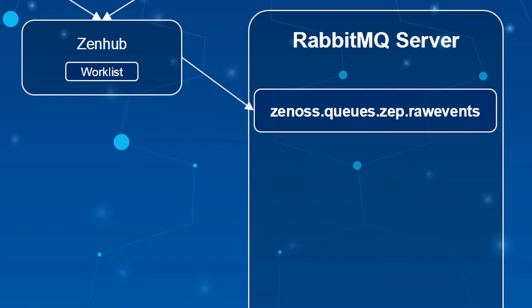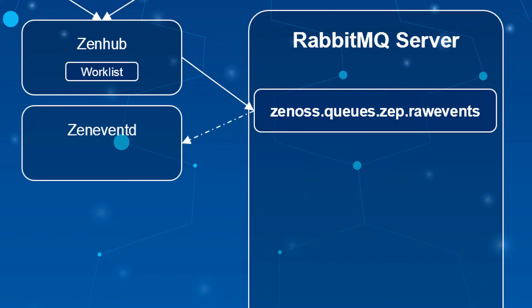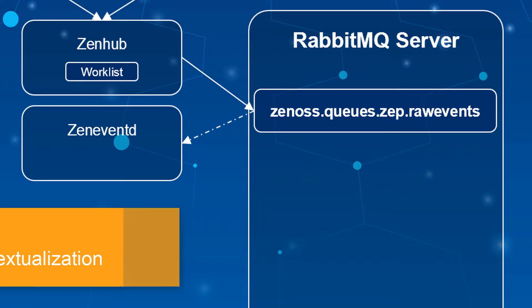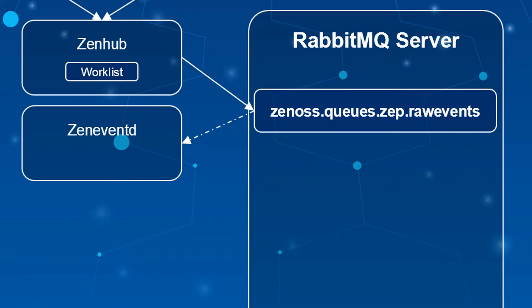These raw events from the Rabbit queue are consumed by the ZenEventD daemon, which begins its work on them. The role of ZenEventD is complex, but it can be generally broken down into three main duties. First, for events coming from known, monitored devices, ZenEventD will add that device's information to the event — for instance, the device's production state, priority, and system, group, and location organizer memberships may not be known to the originating collection daemon. ZenEventD provides this device context to the event to enhance its utility.